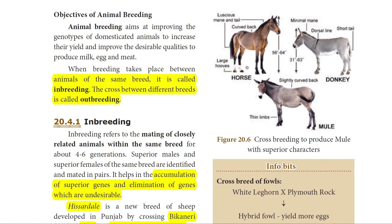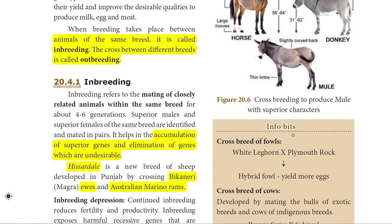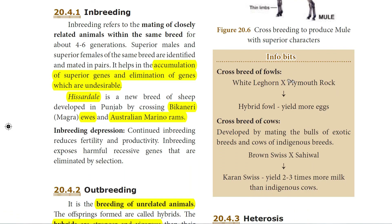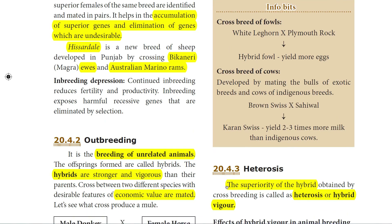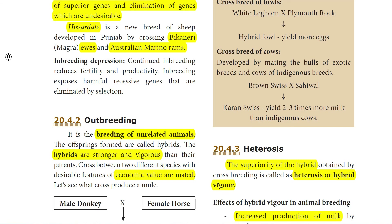One example of outbreeding: male donkeys crossed with female horses produce mules, which are superior to both horses and donkeys in strength, intelligence, ability to work, and disease resistance — but mules are sterile and cannot produce offspring. Another example: White Leghorn crossed with Plymouth Rock fowls produces a hybrid that yields more eggs. Crossbreeding of cows — Brown Swiss cow crossed with Sahiwal — produces Karan Swiss, which yields two to three times more milk than indigenous cows. The superiority of hybrids over their parents is called hybrid vigour or heterosis.